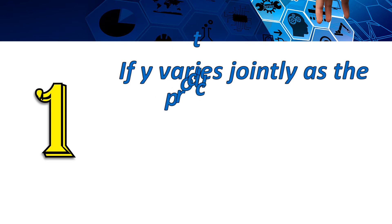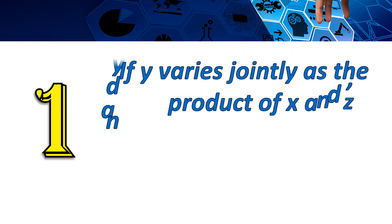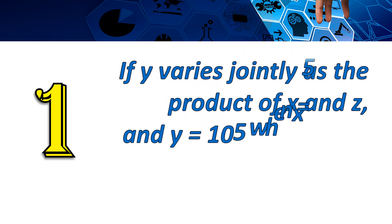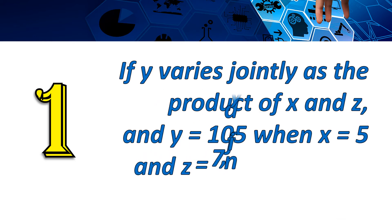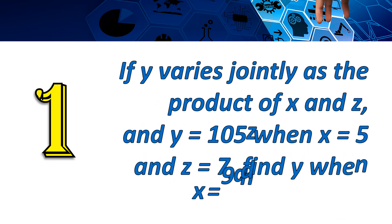Let us have this first example. If y varies jointly as the product of x and z, and y equals 105 when x equals 5 and z equals 7, find y when x equals 9 and z equals 10.